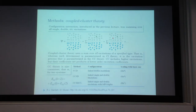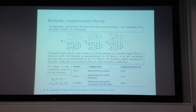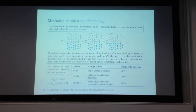Instead, coupled cluster sums over all excitations of a specified type. When we say CCD—coupled cluster doubles—it will sum over all double excitations, over all double excitations of double excitations, and so on.